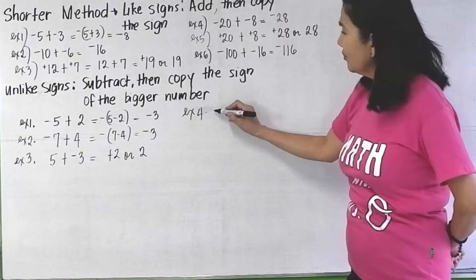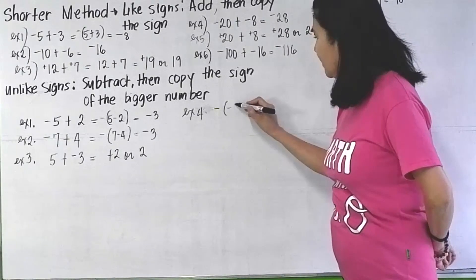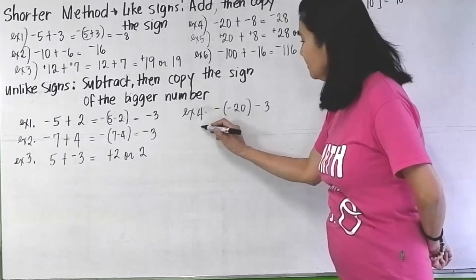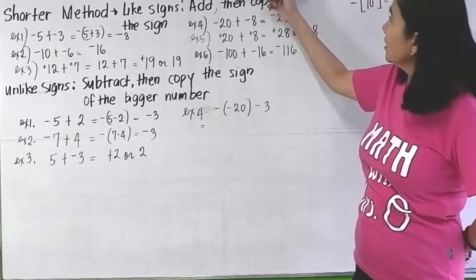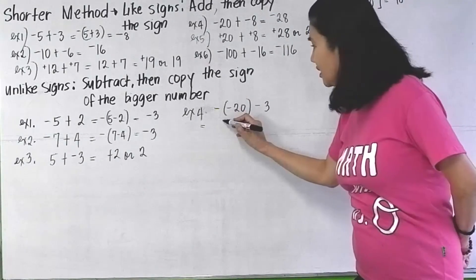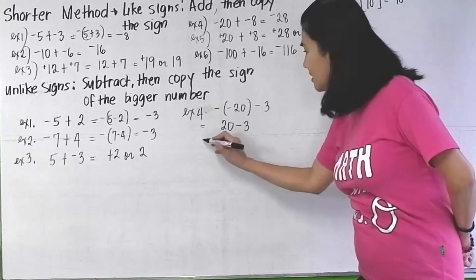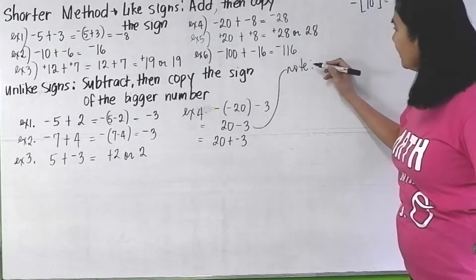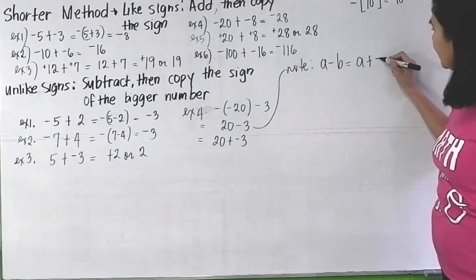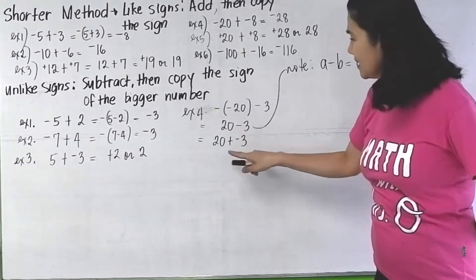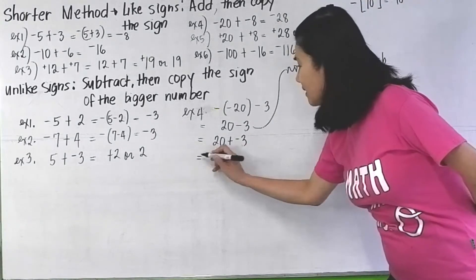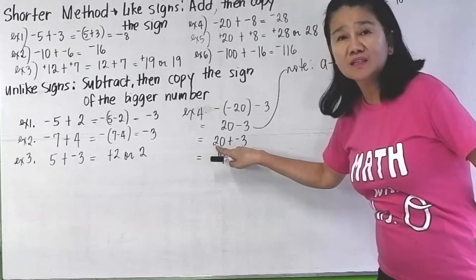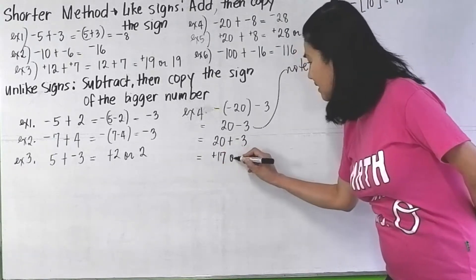Example 4: we have the negative of negative 20 minus 3. The negative of negative 20 — applying the opposite rule — is positive 20 minus 3. Remember that a minus b is the same as a plus the negative of b, so 20 minus 3 is the same as 20 plus the negative of 3. Apply the rule: subtract. 20 minus 3 is 17. Copy the sign of the bigger — 20 is bigger, its sign is plus. So the answer is 17.